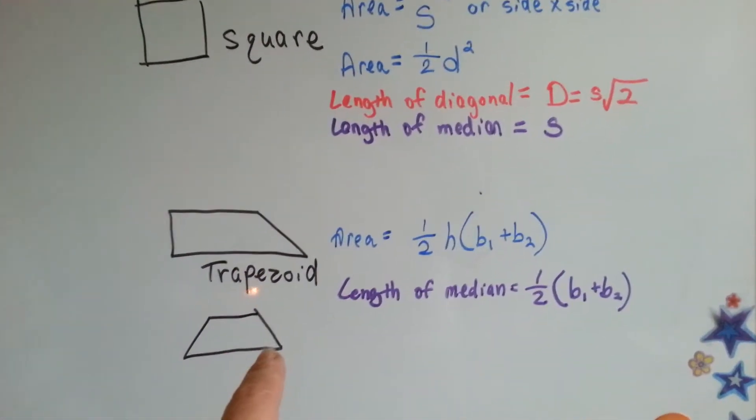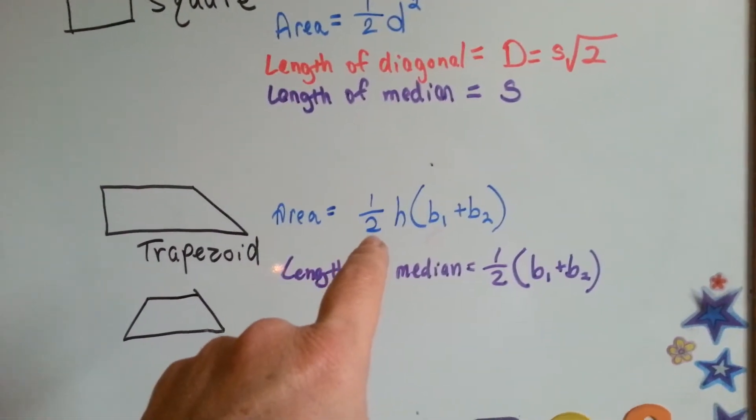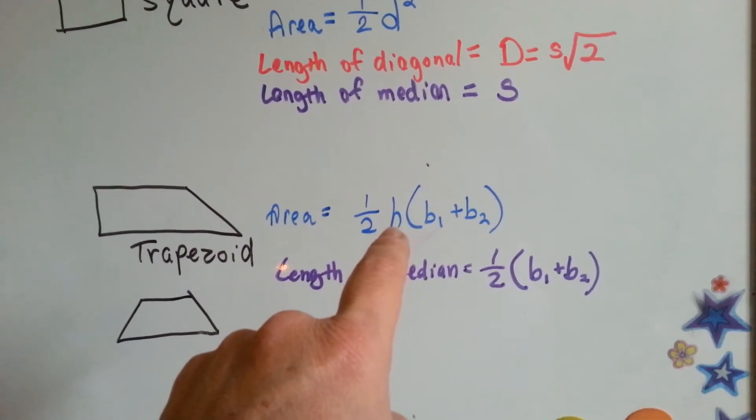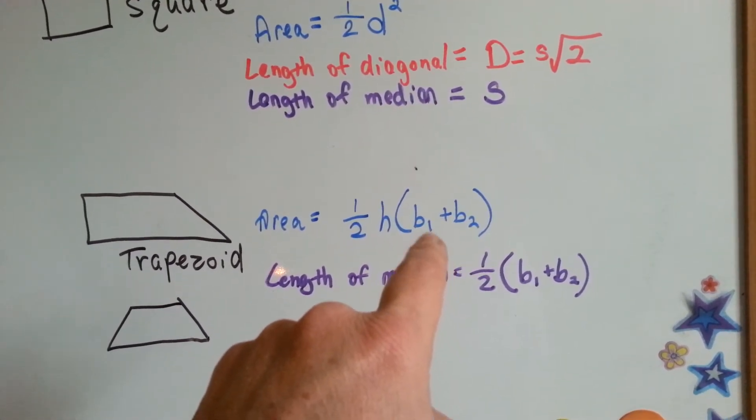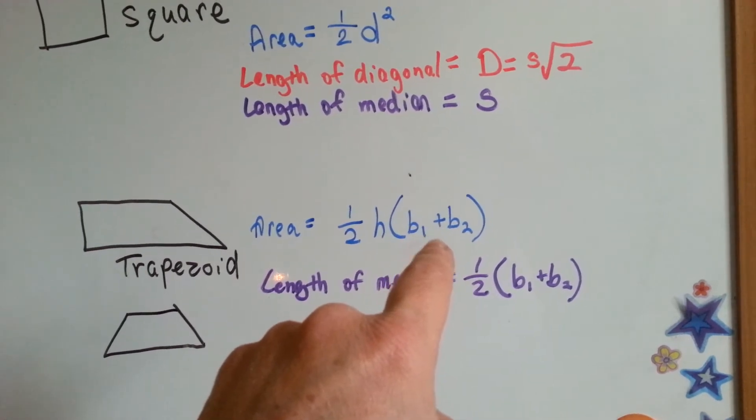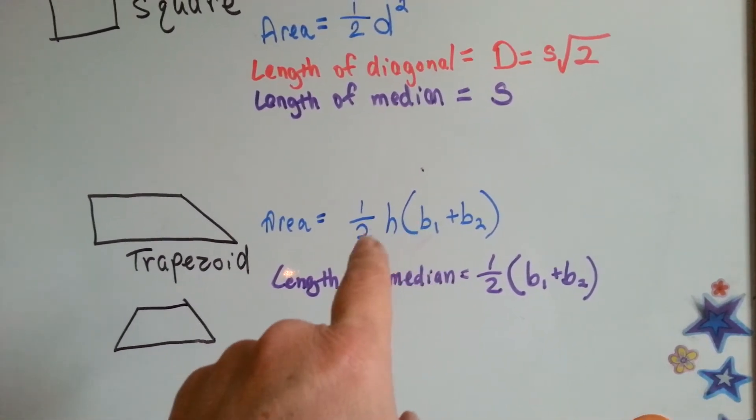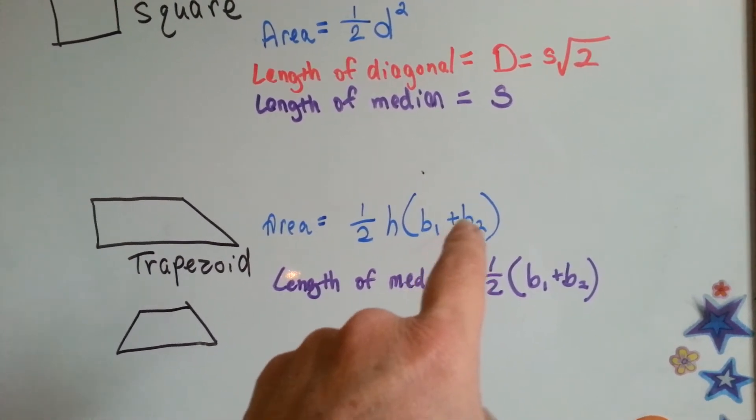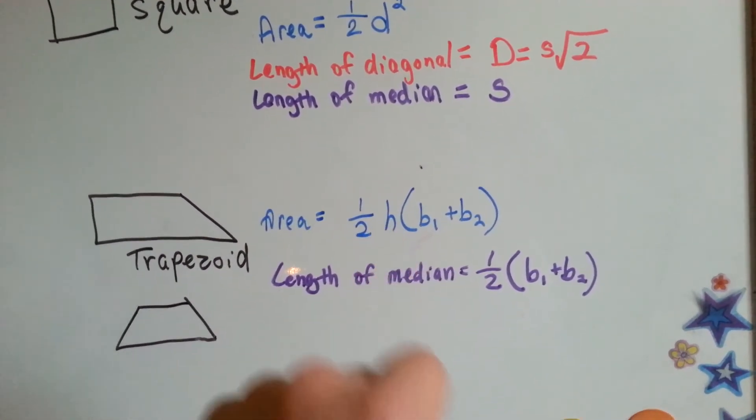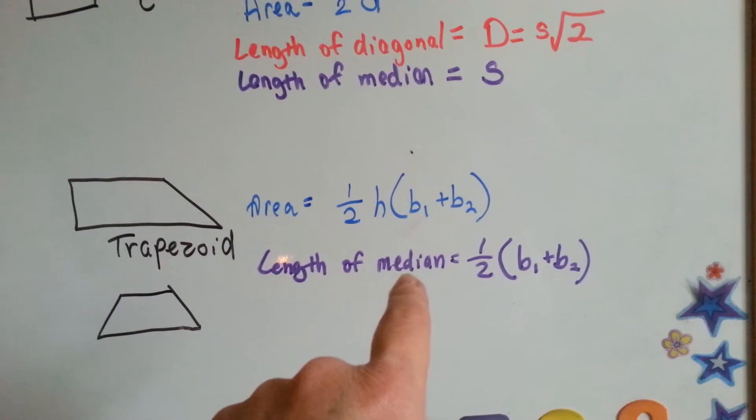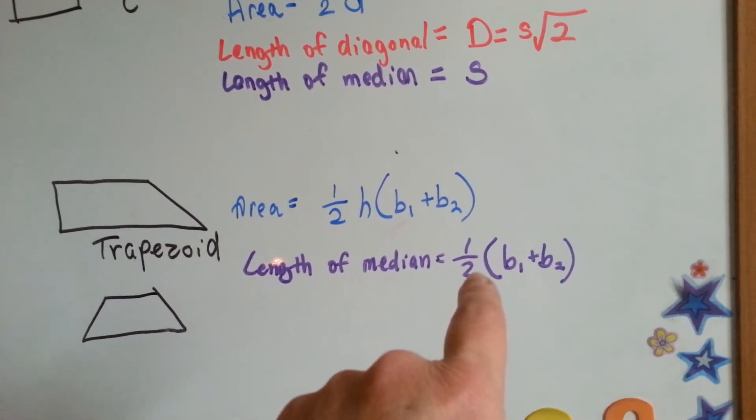For a trapezoid, to find the area, you do half the height times base 1 plus base 2. The length of the median is base 1 plus base 2 times half.